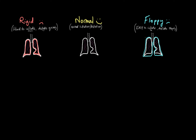So we have these different situations. If we're ventilating someone in volume control and their lungs change from normal to rigid for some reason, what are we going to see on the ventilator? That's the purpose of this video — to look at the relationship between volume and pressure in volume control ventilation.